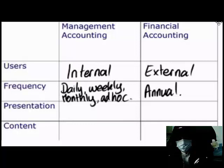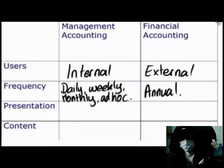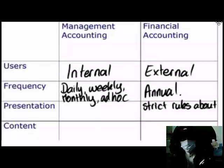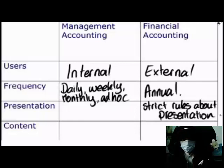Regarding presentation, for a company's financial statements published for external use, there are very strict rules about the format of each report, what needs to be included, and how the different assets and liabilities need to be treated. So for financial accounting information there are strict rules and standards about presentation — all companies must follow these rules when preparing their financial statements. Management accounting information is for internal use and can be in any format the company chooses to use, whatever works best for the management of that particular company — there's no set format or rules.